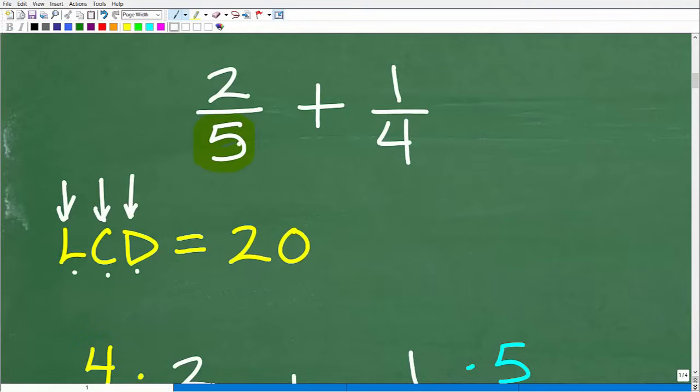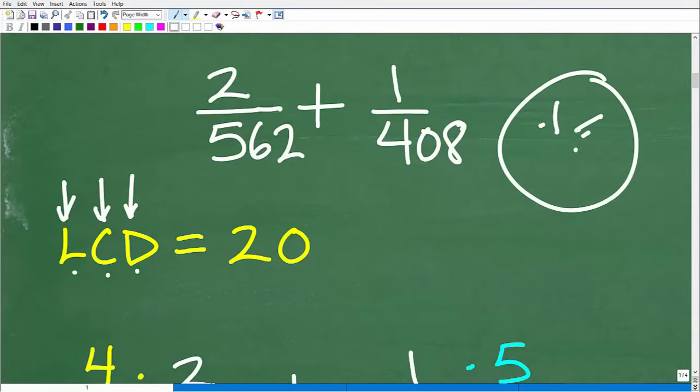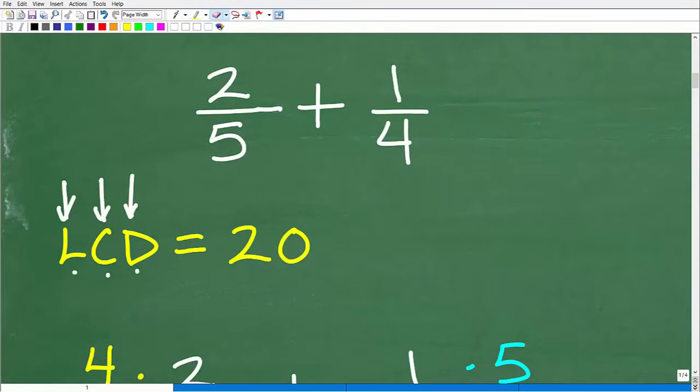Instead of 2/5 plus 1 over 4, let's kind of like, you know, make these denominators a little bit interesting. What if I had like 562 and 408? What if I was trying to add these two fractions, right? A lot of you would just be like really angry at me and be like, yeah, that's not fair. I'll just use my calculator. Matter of fact, I'm just going to leave your YouTube video right now. Well, what I'm trying to show you is a technique that you could actually use even with a more challenging problem like that.